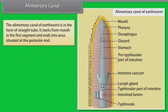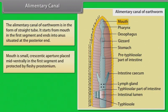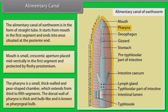The alimentary canal of the earthworm is in the form of a straight tube. It starts from the mouth in the first segment and ends at the anus at the posterior end. The mouth is a small, crescentic aperture placed mid-ventrally in the first segment, protected by the fleshy prostomium. The pharynx is a small, thick-walled, pear-shaped chamber extending from the third to fifth segments, with a thick bulb-like dorsal wall known as the pharyngeal bulb.